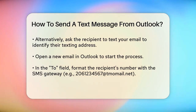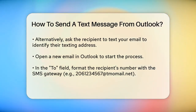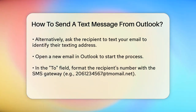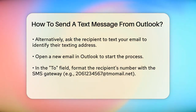Now let's get into the nitty-gritty. Open a new email in Microsoft Outlook. In the To field, enter the 10-digit phone number followed by the at sign and the SMS gateway. For instance, if you're texting someone with a T-Mobile number, it would look like 2612345678@tmomail.net.